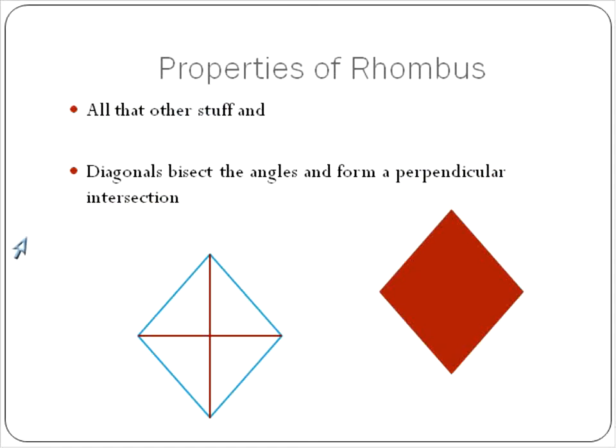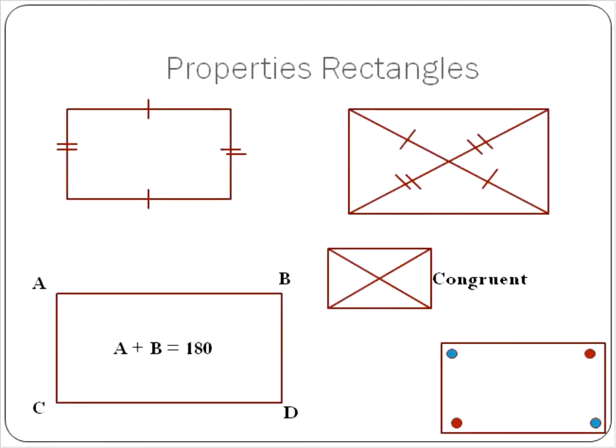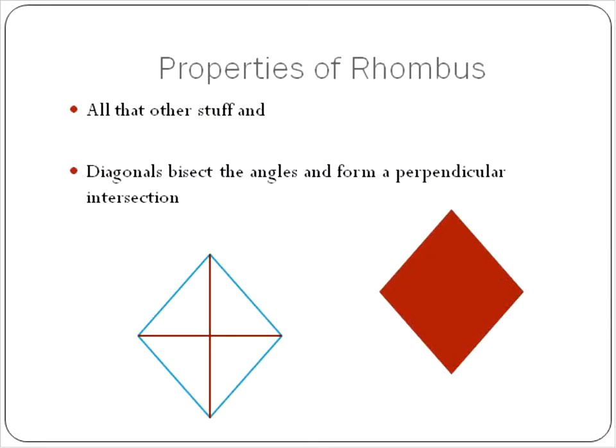The properties of the rhombus - instead of drawing all the pictures over again, it's all that other stuff, including opposite sides are parallel and congruent. The diagonals meet in the center and create congruent sides. Angles A and B are supplementary, and opposite angles are equal. So all of those things apply for a rhombus.